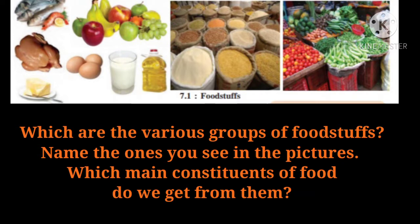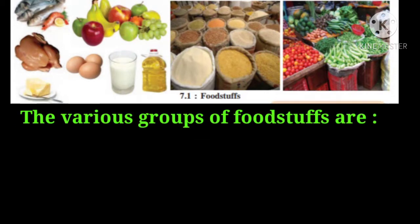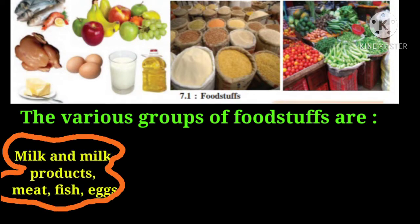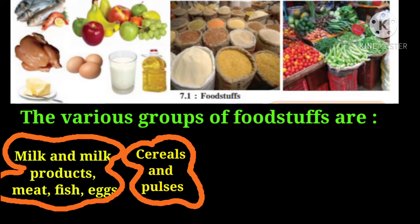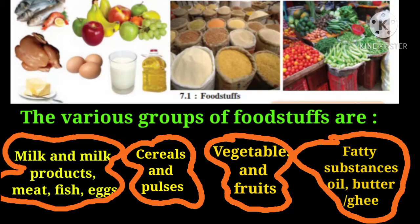The various groups of foodstuffs are: first, milk and milk products, meat, fish, and eggs; second group is cereals and pulses; third group is vegetables and fruits; fourth group is fatty substances — oil, butter, and ghee.